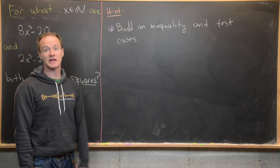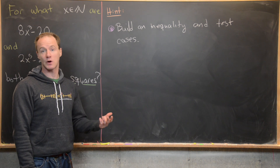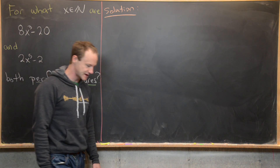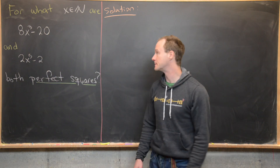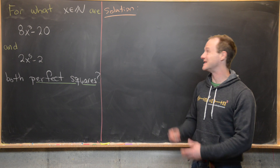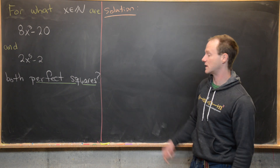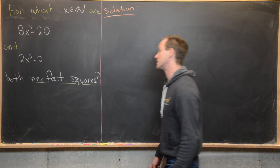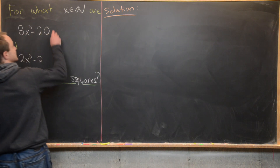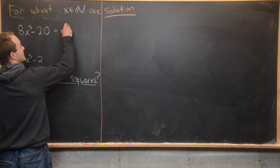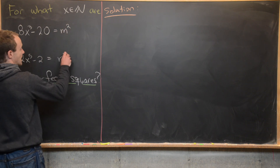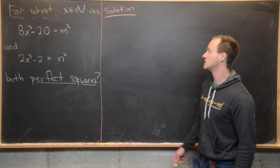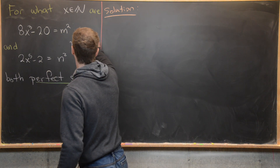Hopefully that hint was helpful. Now we're ready to look at a solution. Since we want to find x values where these two quantities are perfect squares, let's introduce some notation. Let's say 8x³ minus 20 equals m² and 2x⁵ minus 2 equals n², where m and n are the natural numbers that build this perfect square relationship.